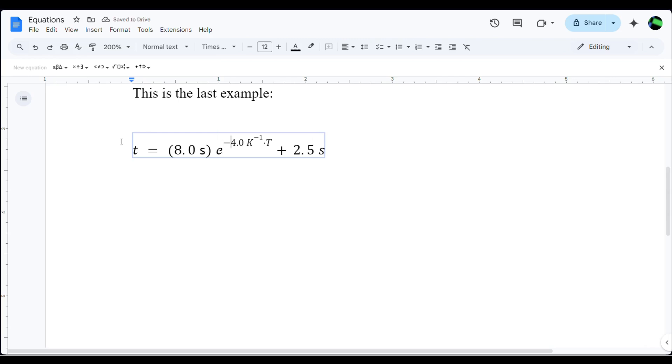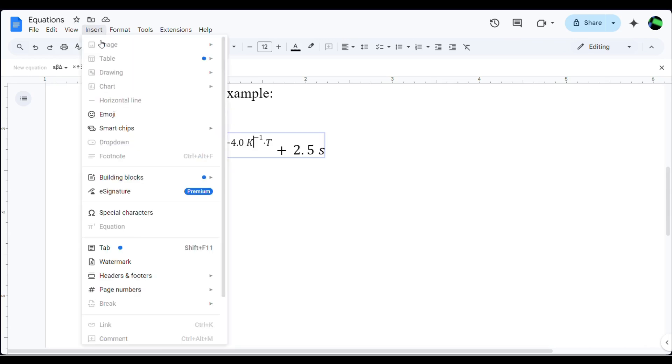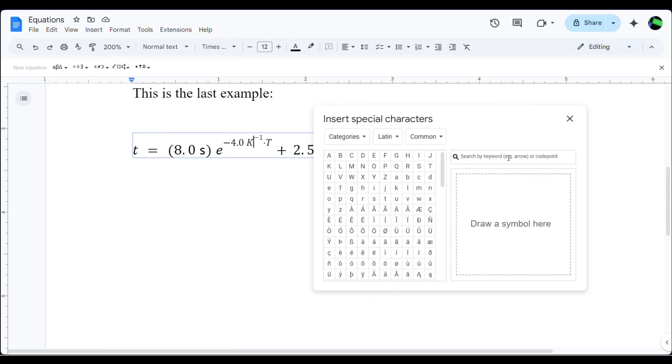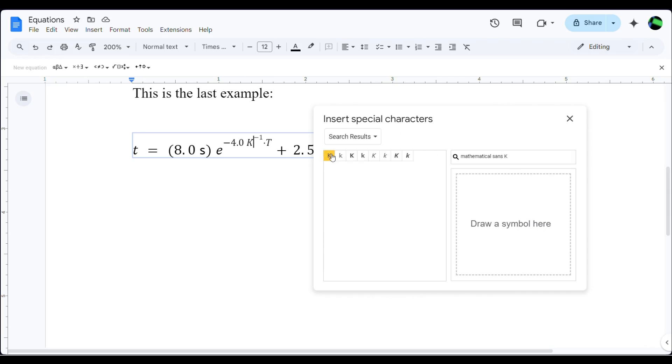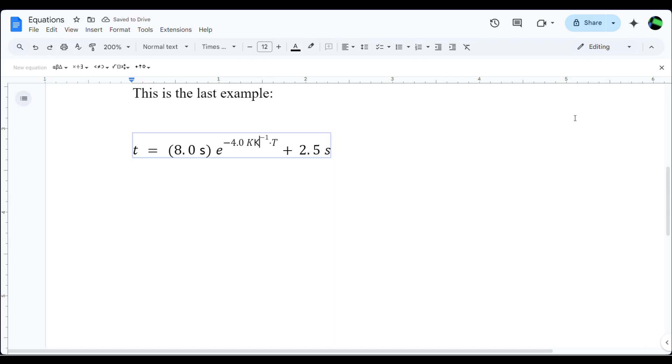I've got an E here—E to the minus 4.0 inverse Kelvin. That K represents Kelvin, so Insert Special Character, mathematical sans K. Insert non-italicized capital K for Kelvin. There we go.